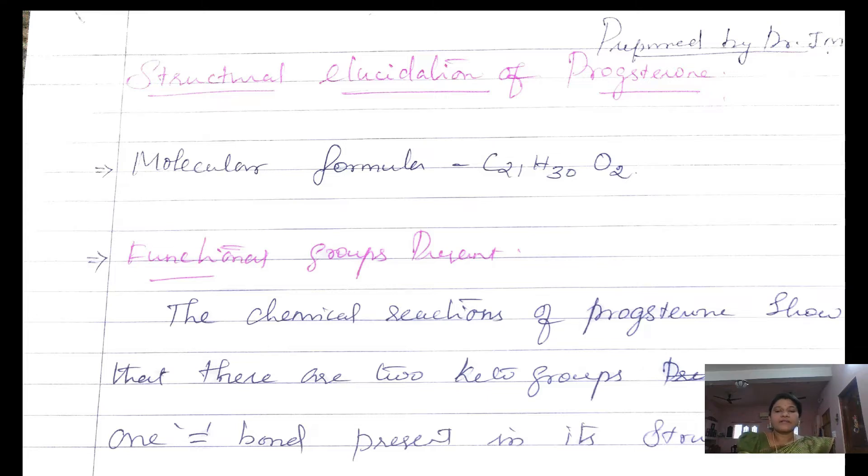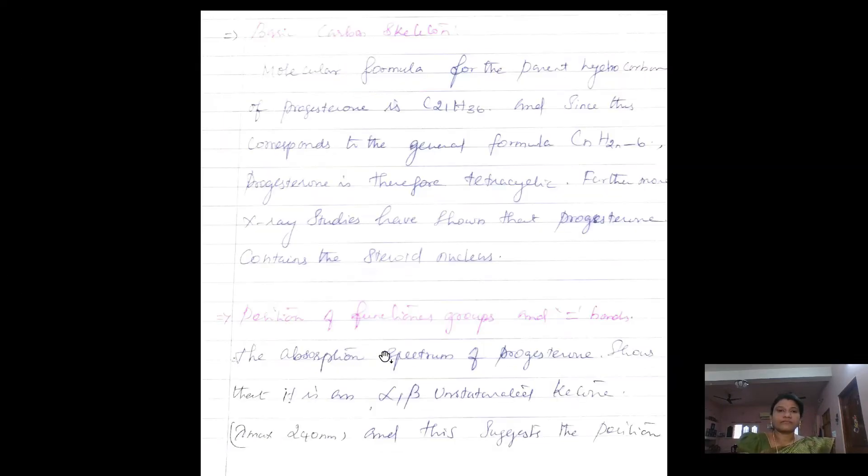Further, upon catalytic reduction, it consumes three molecules of hydrogen. Therefore, in its structure, it possesses two keto groups and one double bond also.